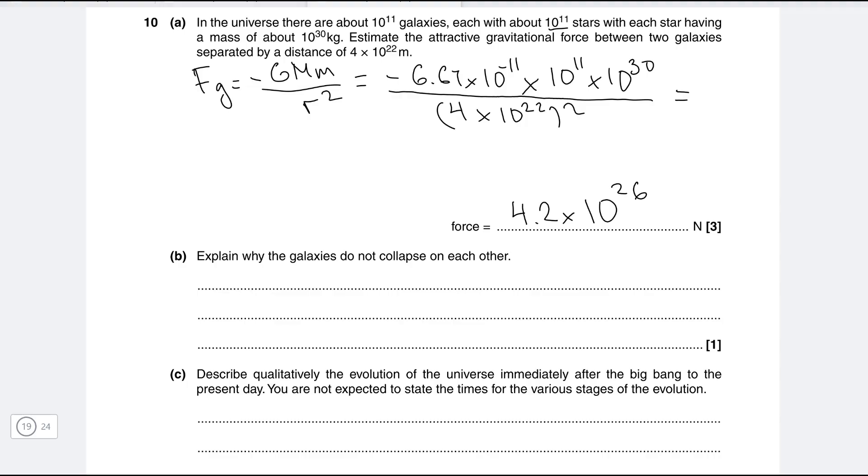Okay so part b explain why the galaxies do not collapse on each other. So this is happening because the galaxies are actually receding. So we can say that the galaxies are receding. And this is due to the expansion of the universe. So I'm just going to write a few things that can score marks on this question. So we can say that the universe is expanding and this of course is fueled by dark energy.